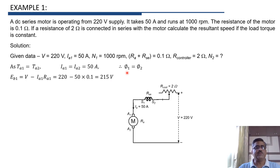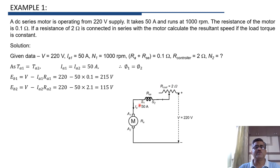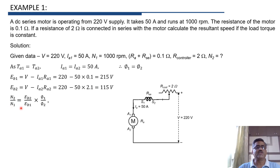Similarly, Eb2 equals V minus Ia2 into Ra2. V is still 220 volt and Ia2 is still 50 ampere, but Ra2 is now different because 2 ohm is connected in series. The initial armature circuit resistance was 0.1 ohm; adding 2 ohm gives Ra2 equals 2.1 ohm. Therefore Eb2 equals 220 minus 50 into 2.1, which equals 115 volt. We know that N2 upon N1 equals Eb2 upon Eb1 into phi1 upon phi2.